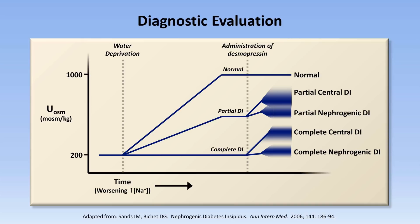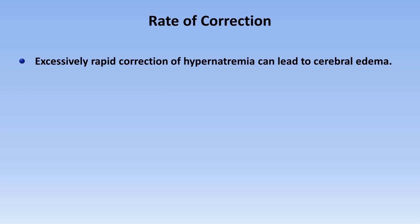Unlike the physiology, list of etiologies, and diagnostic workup — most of which is simpler to understand in hypernatremia compared to hyponatremia — the treatment of hypernatremia often requires a little bit more brain power. The problem with treatment is that excessively rapid correction can lead to cerebral edema. This is the mirror image of how rapid correction of hyponatremia can lead to the osmotic demyelination syndrome.